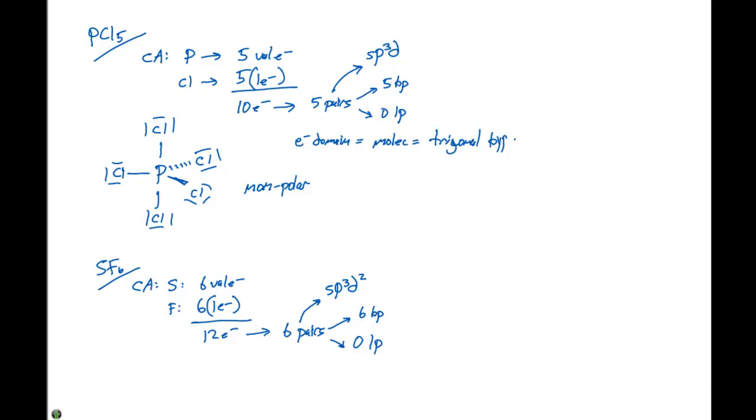In this particular case, since we have zero lone pairs, our electron domain geometry is going to equal our molecular geometry. And that's going to be an octahedron.